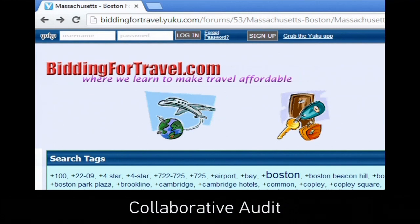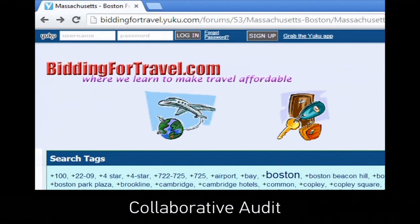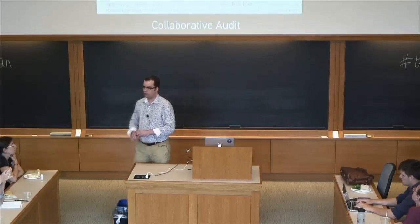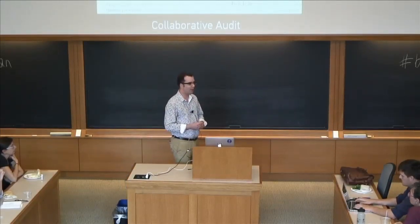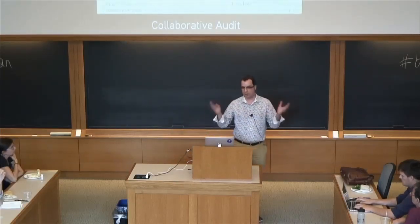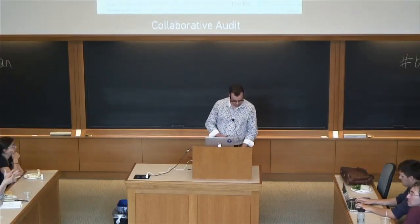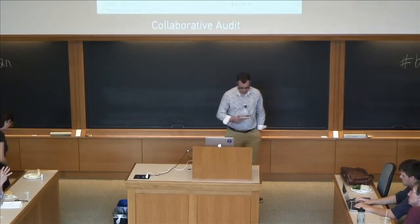Finally, the approach we're actually advocating is the collaborative audit, which combines features from many of the approaches discussed. You could think of it like biddingfortravel.com — a user community where people got together and decided to exchange information about what kinds of bids they're putting on Priceline, then see by comparing bids and results if they can arrive at a collective understanding of how Priceline works. For our purposes, it has interesting features: users working together, it's not clearly unethical because they're using the system as they normally would, and they're interested in figuring out how the algorithm works. Our idea for the collaborative audit would involve some software-assisted way to organize a large group of users and learn from them.